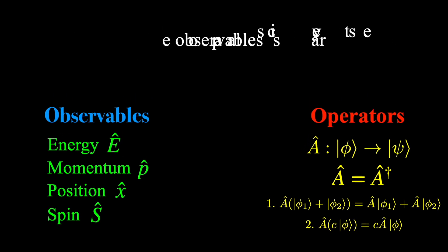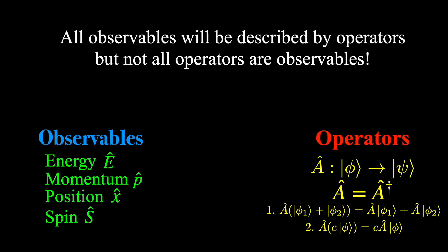And it's important to note here that although every observable will be described by an operator, not all operators will correspond to an observable. For example, the identity operator, which I showed was equal to this expression in a previous video, just leaves a state unchanged, so it does not correspond to an observable quantity.